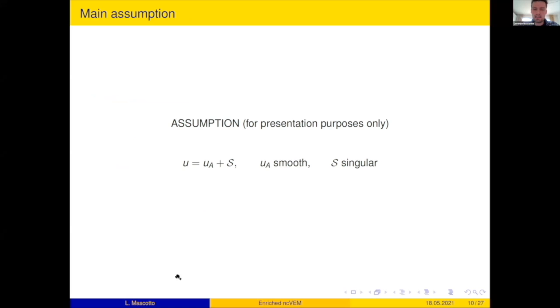I will make a main assumption for the sake of simplicity. I assume that they only have one singular function at one vertex. Of course, what I'm going to present can be extended to more general situations. But just for the sake of presentation, let's stick to this. So my U is going to be the sum of a singular function and an analytic function.